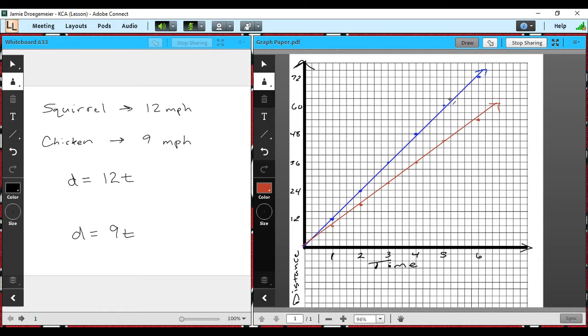And so in order to make this a fair race, I would want to look at where do they have the same distance as an example. And so I'm going to pick up a third color here. And so if we look at a distance of 36 miles.